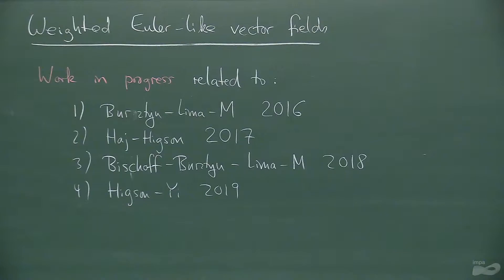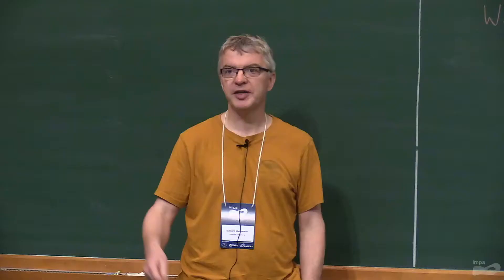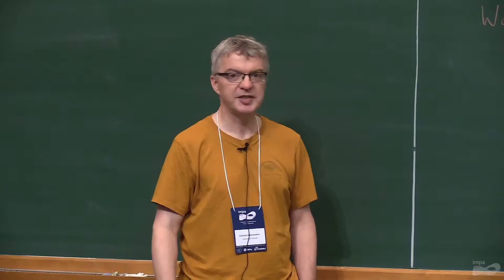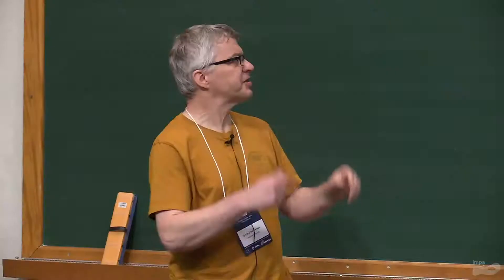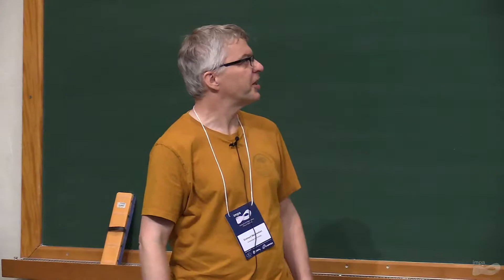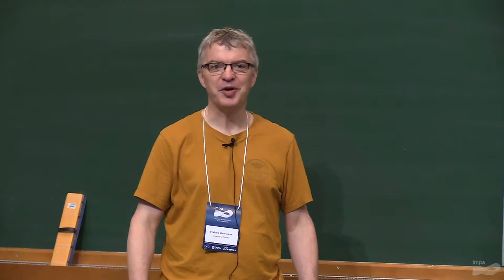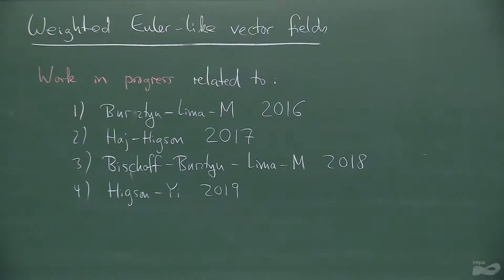The idea of Euler-like vector fields was introduced in a paper of Enrique, Hudson, and myself in 2016. Then there was a paper by Hatch and Hickson, which improved on our proof a little bit and gave some further generalizations and applications. And then we improved on their proof a little bit and gave some further applications and generalizations, and Hickson and Yee again returned to the same kind of idea. This idea of doing some weightings is something I still wanted to add to the story.